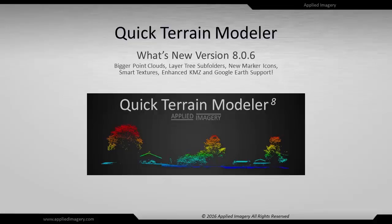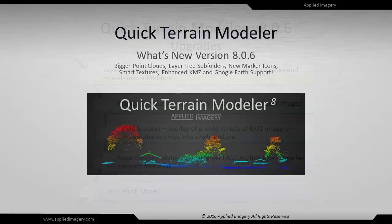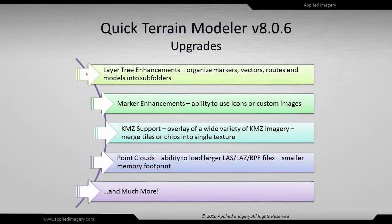Welcome to Applied Imagery's overview of Quick Terrain Modeler version 806. We have added many things our users have been asking for: subfolders in the layer tree, marker icons, KMZ imagery support, and more. But by far the biggest thing we've changed was under the hood.